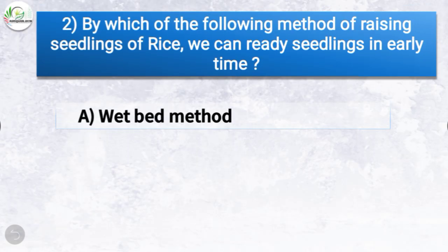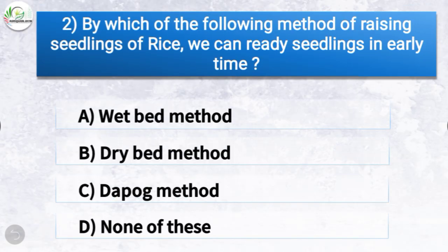Question number two: by which of the following method of raising seedlings of rice can we ready seedlings in early time? The options are wet bed method, dry bed method, dapog method, or none of these. The correct answer is option C, dapog method. So by the dapog method of raising seedlings of rice, we can ready seedlings in early time.